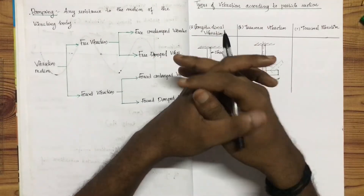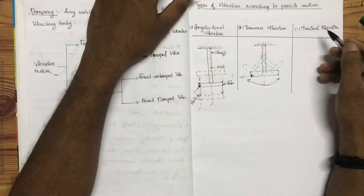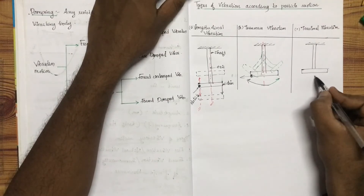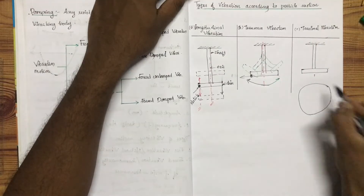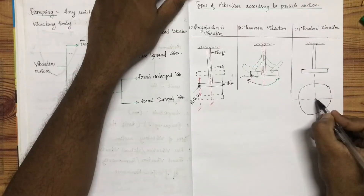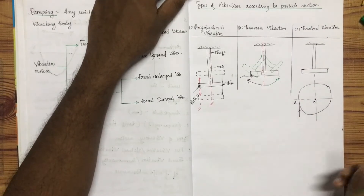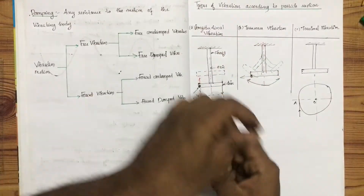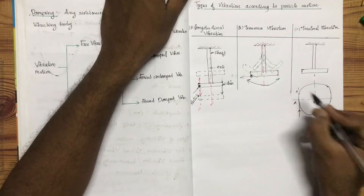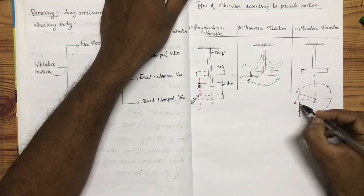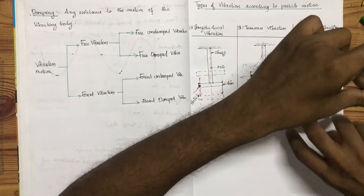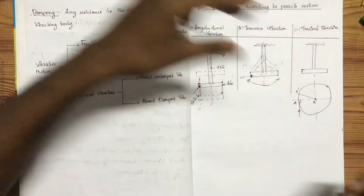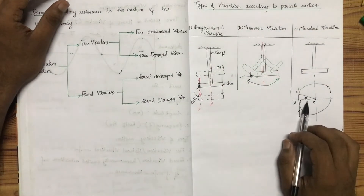Torsional vibration is different. A tangential force is applied to a disc. We have a shaft and a disc. When I apply a tangential force to the disc, a point on the disc will deflect. There will be a deflection at that point. This disc undergoes an angular deflection — that is the key characteristic of torsional vibration.